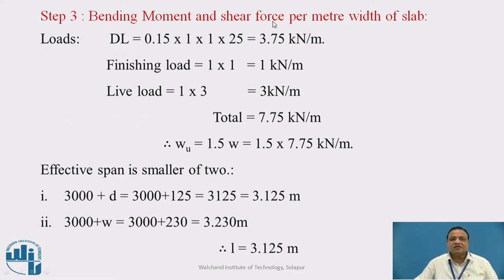Step 3: Bending moment and shear force per meter width of the slab. First, we calculate the load distribution. Dead load equals 0.15 times 1 times 25 kN per cubic meter, which is 3.75 kN per meter. Finishing load is 1 times 1 equals 1 kN. Live load is 1 times 3, that is 3 kN per meter. Therefore, total load is 7.75 kN per meter. W_u is the partial safety factor, that is 1.5 times 7.75 kN per meter.